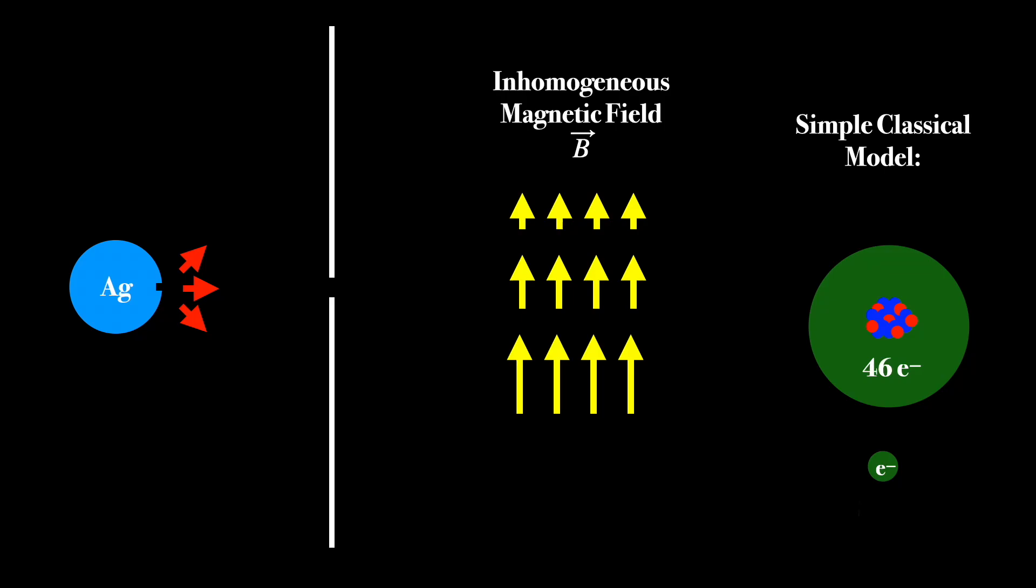However, the silver atom as a whole does have an angular momentum and it is due to the intrinsic momentum or spin of this 47th electron. So this gives the atom a magnetic moment that is equal to the magnetic moment of this single electron.